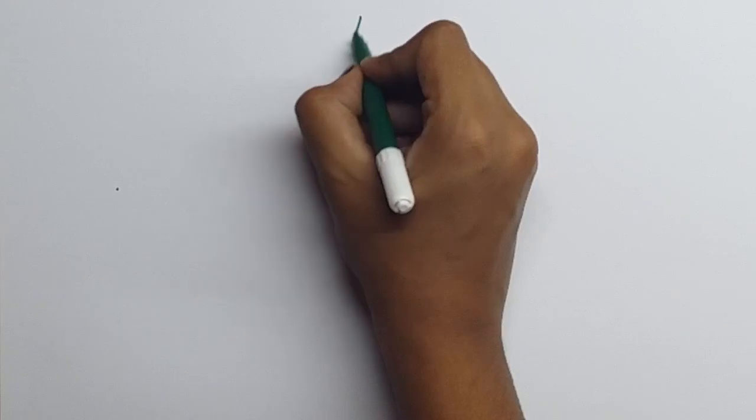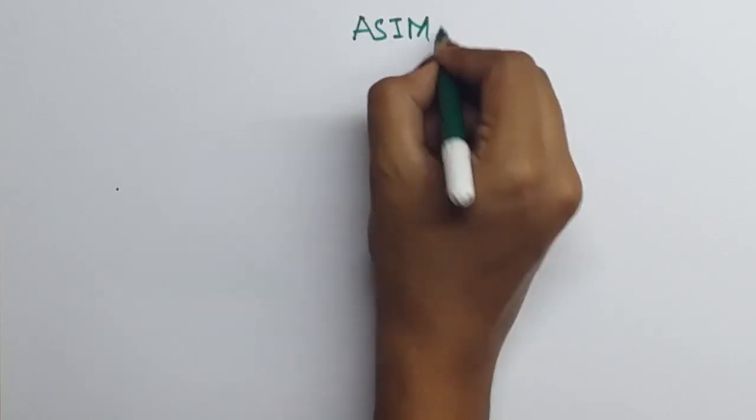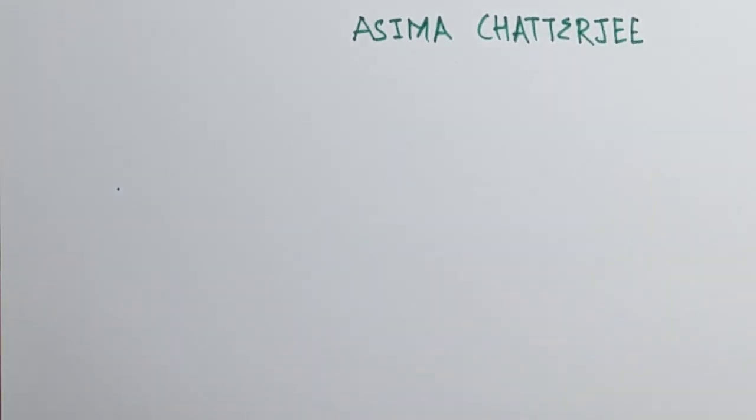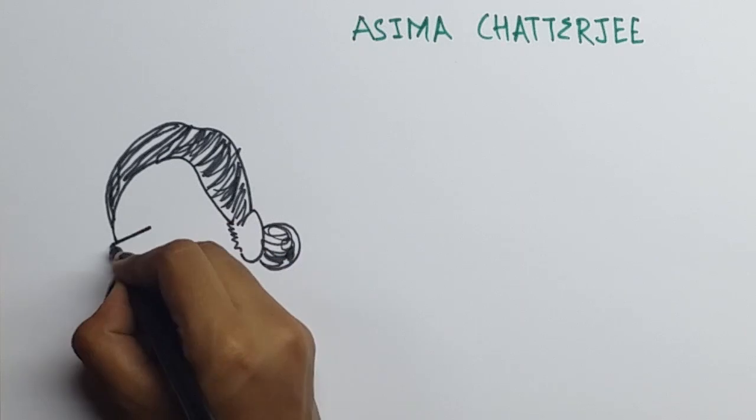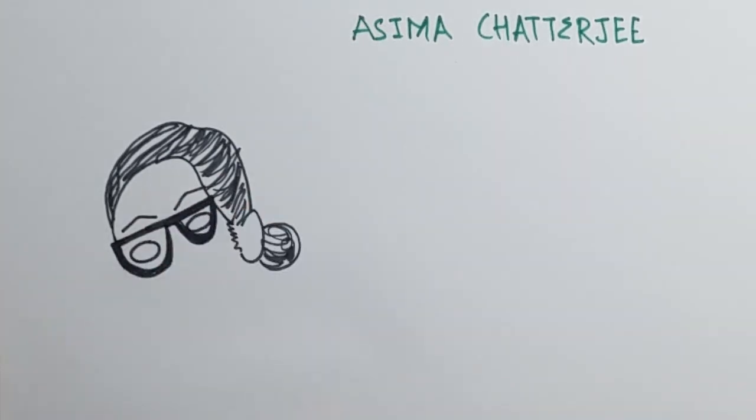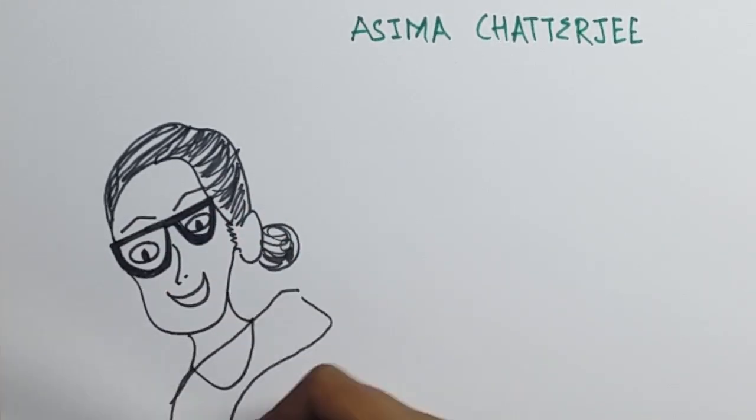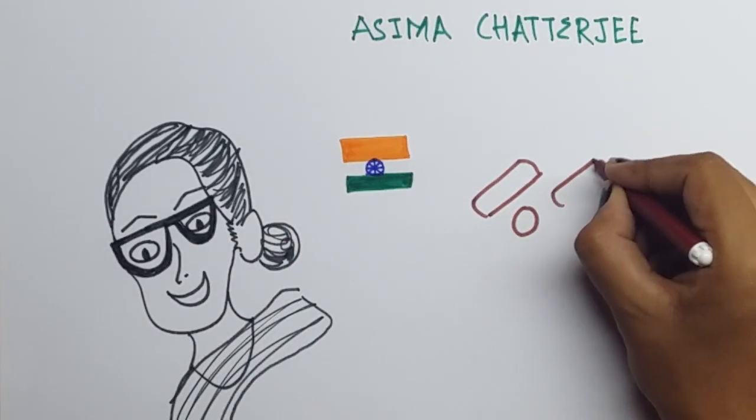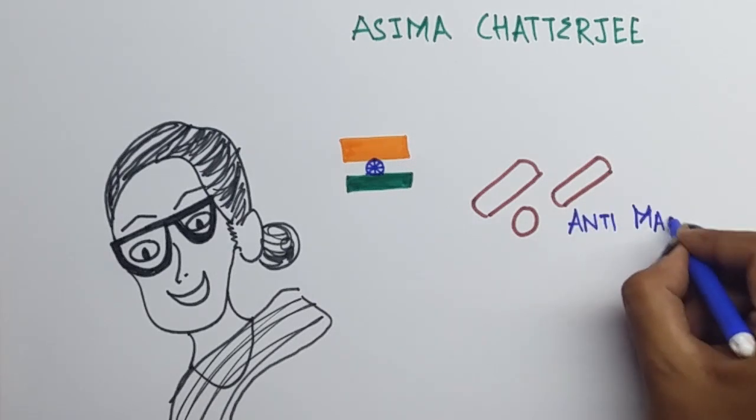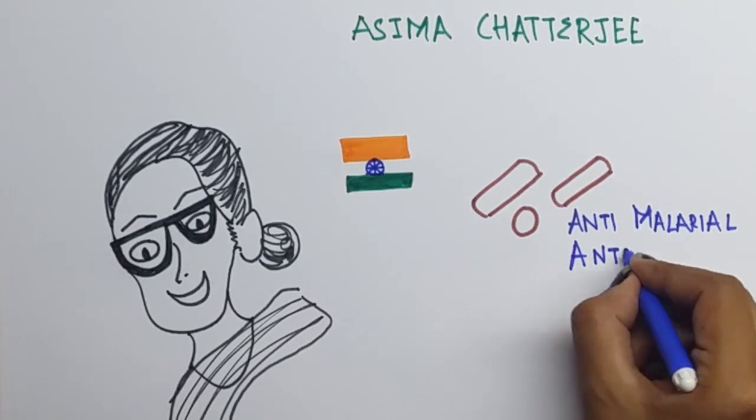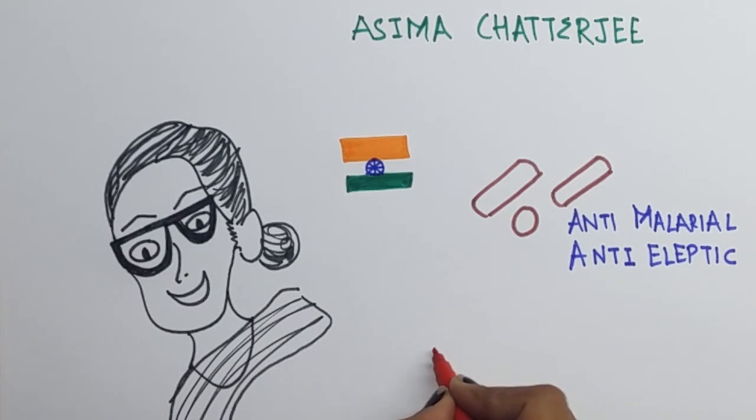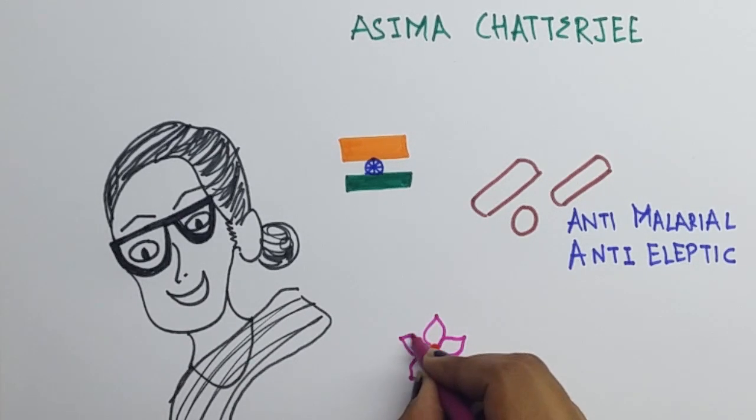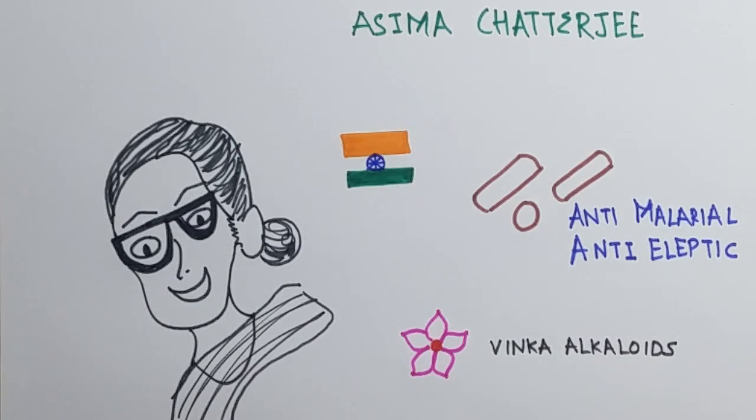Speaking of Chemistry, ever heard of Asima Chatterjee? Asima Chatterjee was an Indian organic chemist. She authored a considerable volume of work on medicinal plants in the Indian subcontinent and was also the first woman to receive a doctorate of science from an Indian university. Her work led to the development of anti-epileptic and anti-malarial drugs. Her most famous work includes her research on the Vinca alkaloids or the periwinkle flower, which is said to have anti-cancer properties.